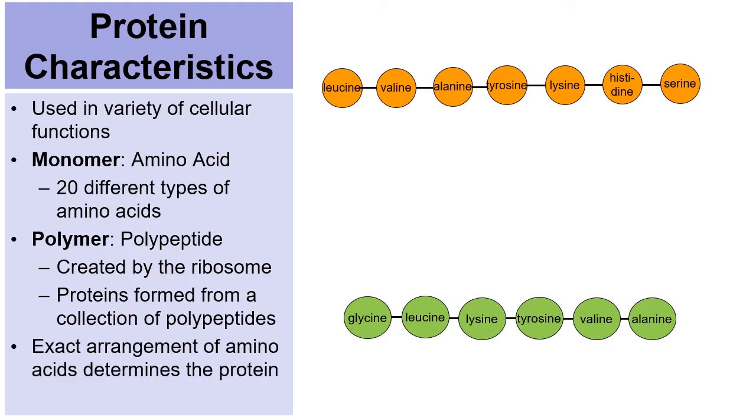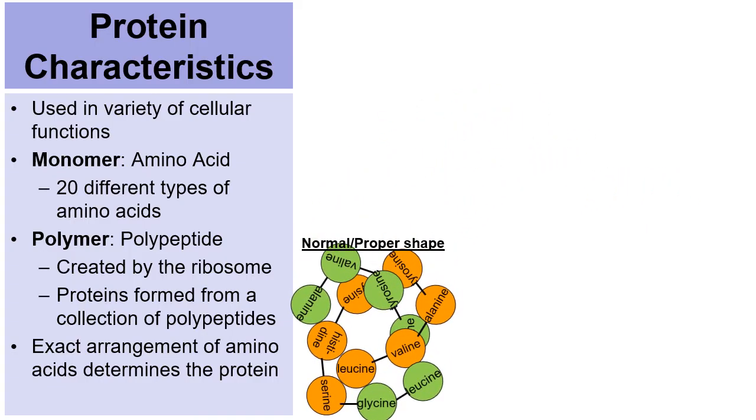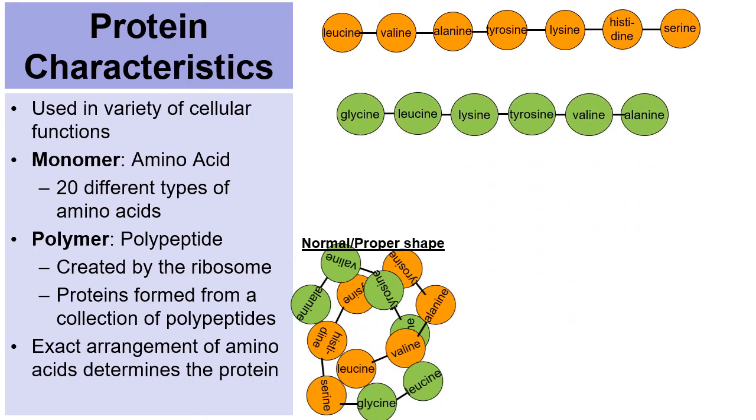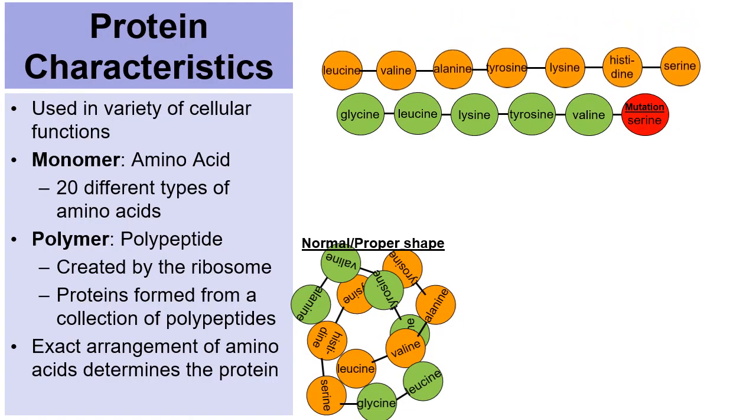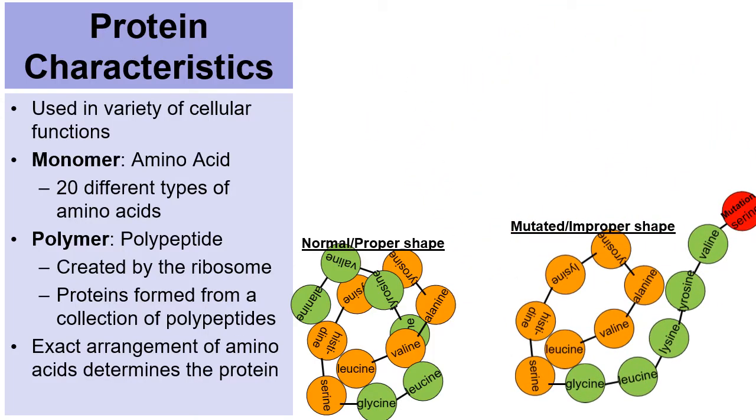And so these two polypeptides will intertwine with one another and twist and fold and wrap into what's called a protein. Now, the exact arrangement of amino acids is what determines the protein. So in this case, the orange and the green will intertwine. And when they react, they form this normal proper shaped protein right here. Well, here's another of the orange chain and here's another of the green chain. Let's pretend there was a mistake in making the green one. That amino acid at the back is mutated. Now, when these two chains intertwine and twist and fold and wrap, because there's a wrong amino acid, the shape of the protein will be altered and therefore its function and a disorder very well could occur.